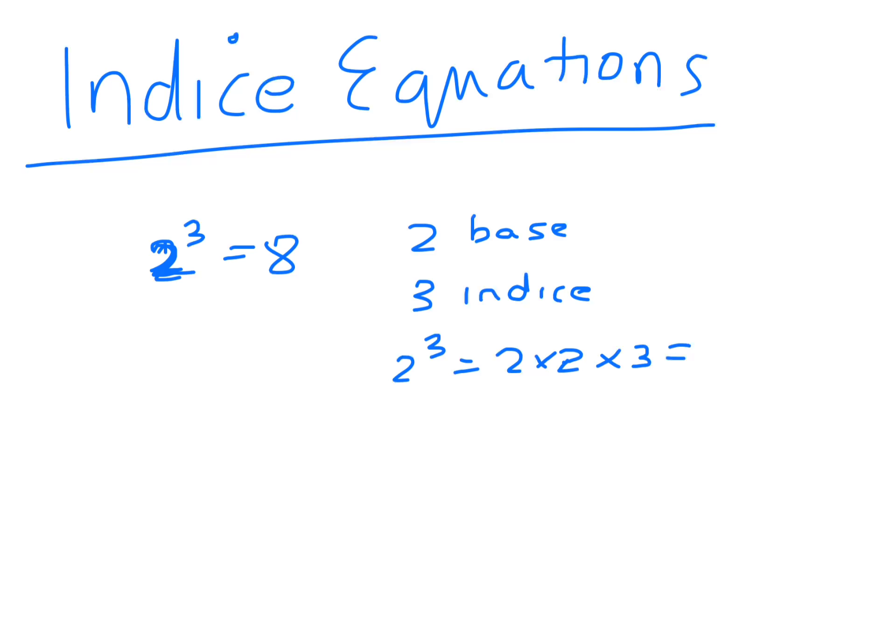And the indice just tells you how many times to multiply it. 2 times 2 is 4, 2 times 4 is 8. So 2 to the 0 is 1, 2 to the 1 is 2, 2 to the 2 is 2 times 2 which is 4, 2 to the 3 is 8, 2 to the 4 is 16, and you could keep going.